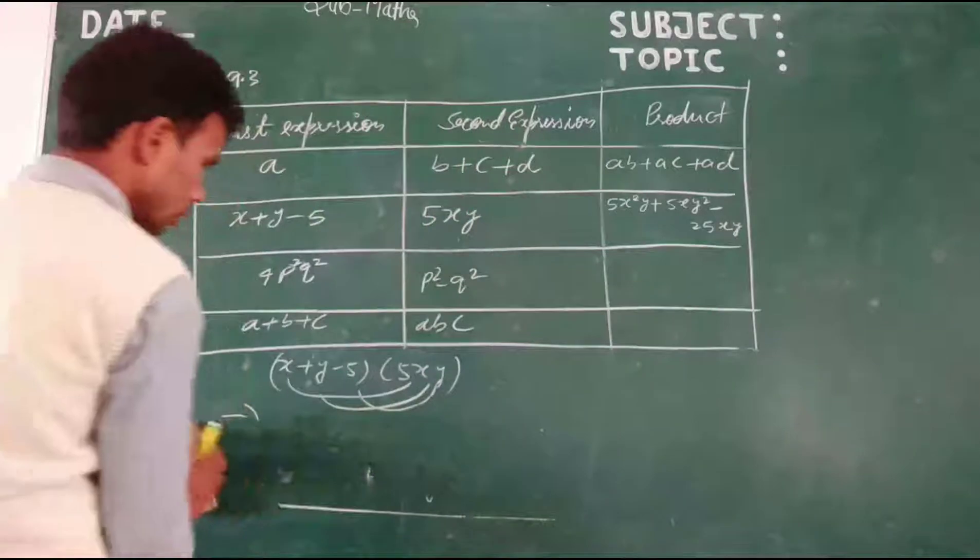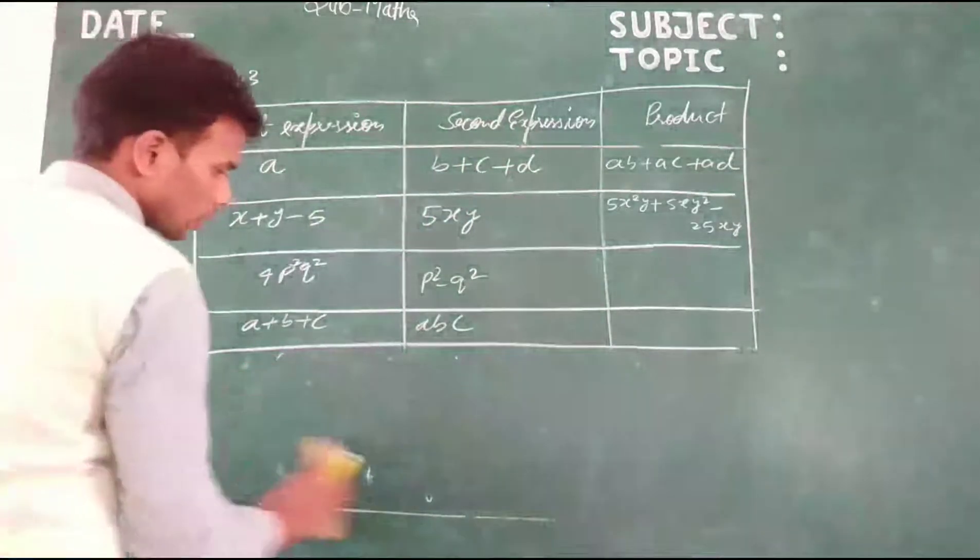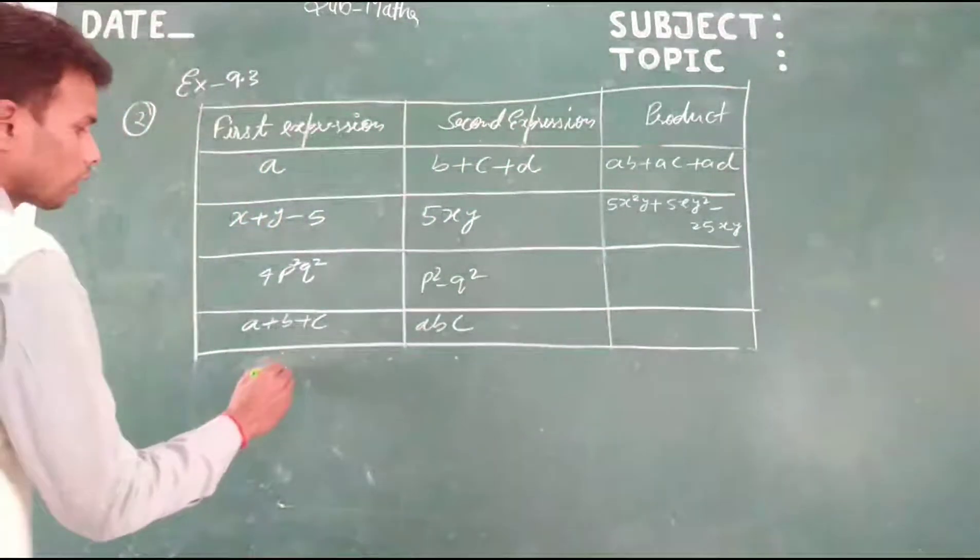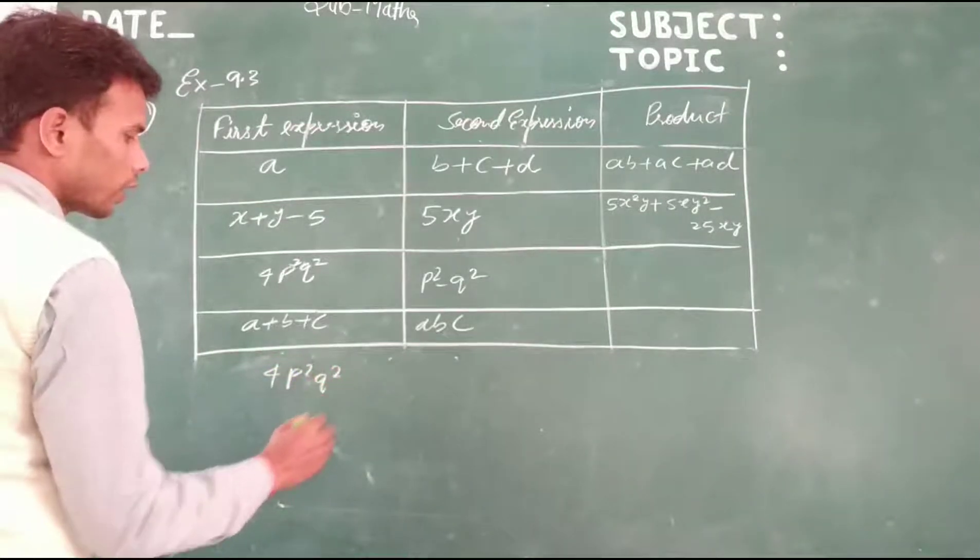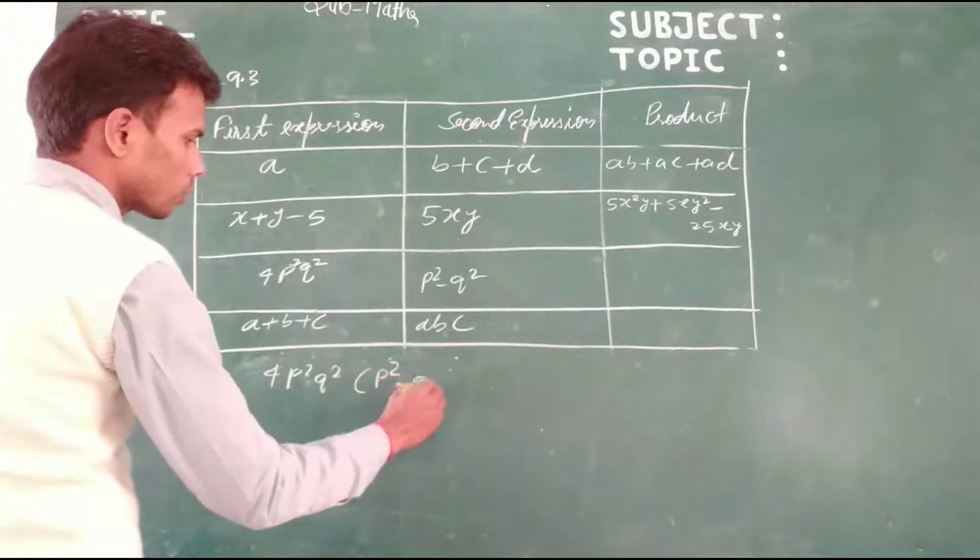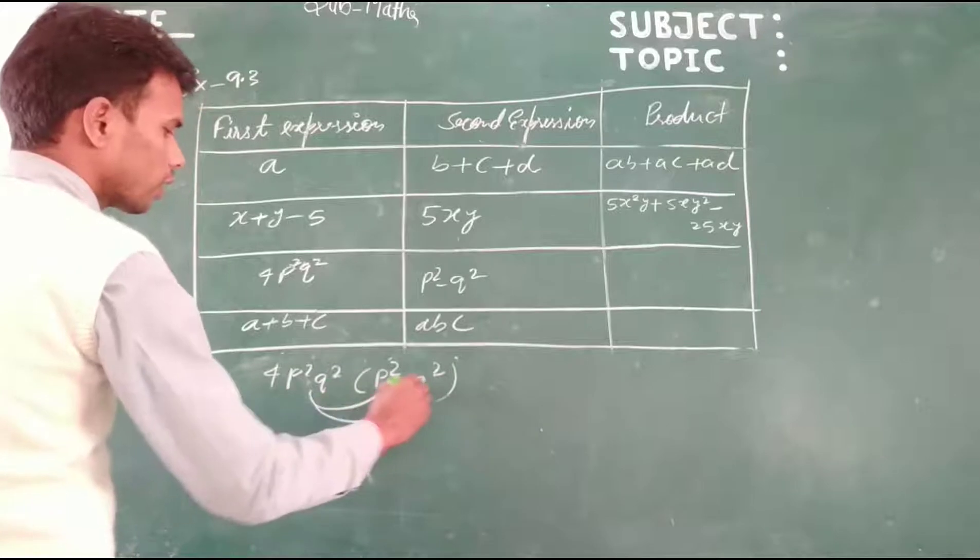Now we solve the third problem. Given here P times 4P squared Q squared. We have to find out the product of P squared minus Q squared. First term to first term, first term to second term.